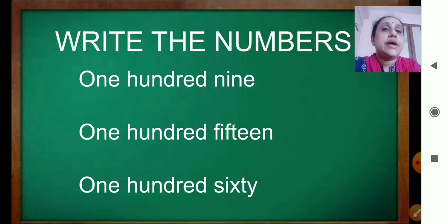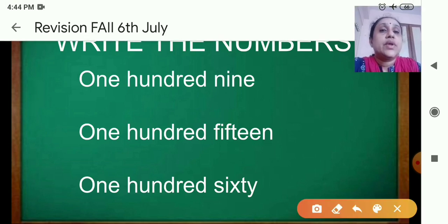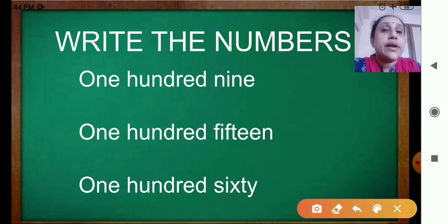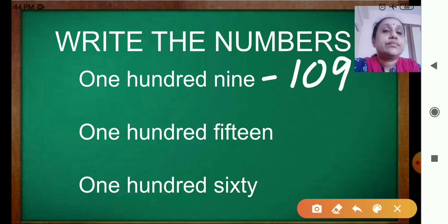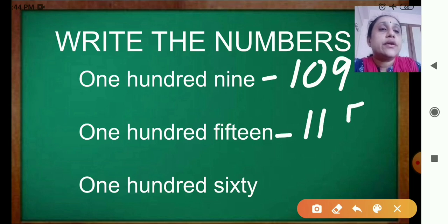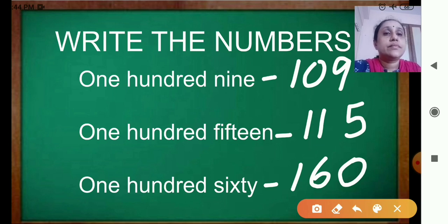Now write the numbers. Number names are written there and you have to write the numbers. See the first one: one hundred nine, so write 109. Then 115. Then 160. Copy down all the numbers.